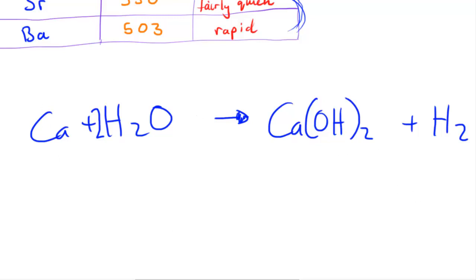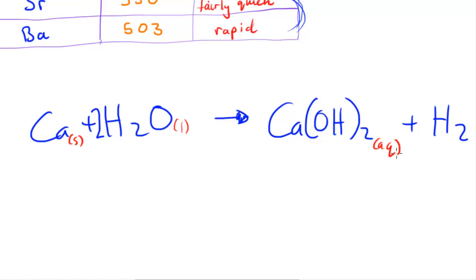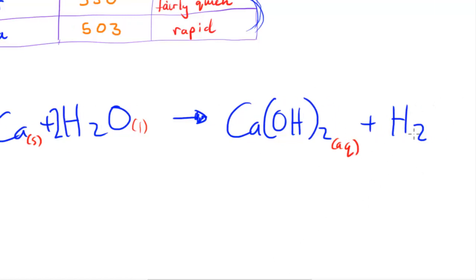Now we need to add state symbols. Calcium is a solid (s), H₂O is a liquid (l), Ca(OH)₂ dissolves in water so it is aqueous (aq), and the H₂ produced is in the gaseous state (g).